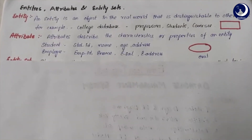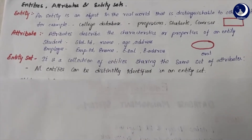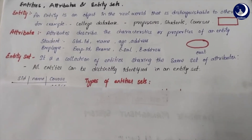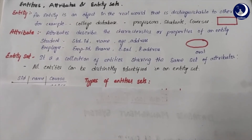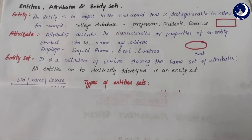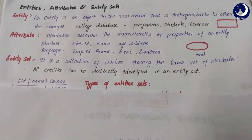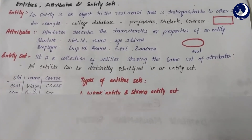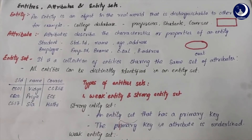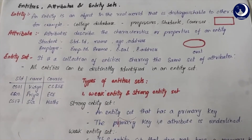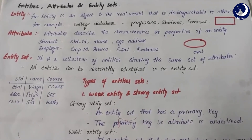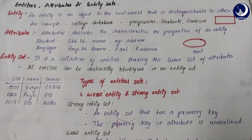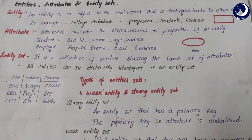Next, entity set. An entity set is a collection of entities sharing the same set of attributes. All entities share the same attributes, yet they have different values, and all entities can be distinguished individually within the entity set. For example, student is the entity and a collection of students forms the entity set. Students like Vidya, Priya and Sia have different values for the same attributes — SID, name and course. This is how an entity set is represented in a table.